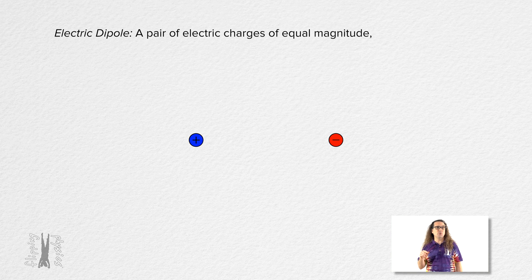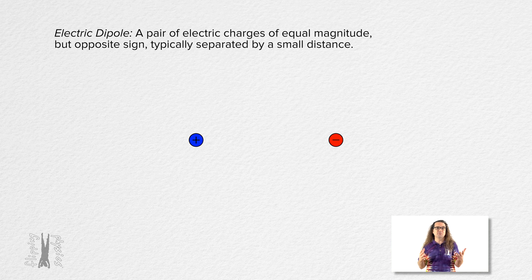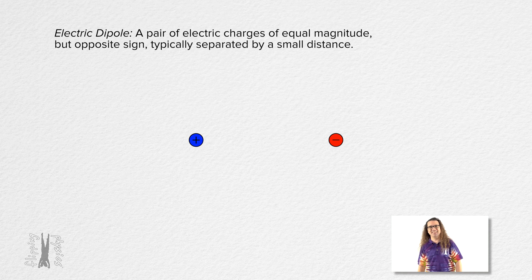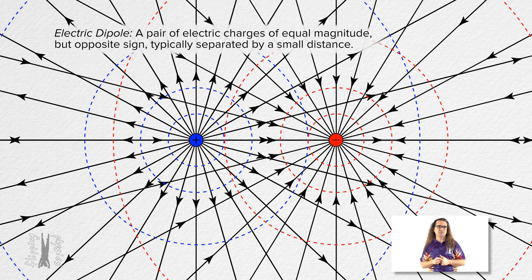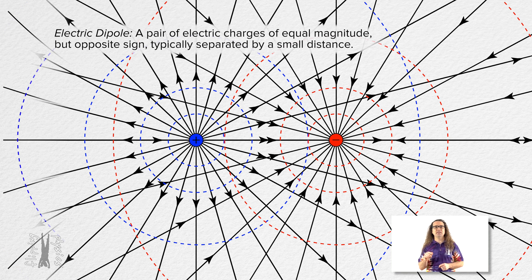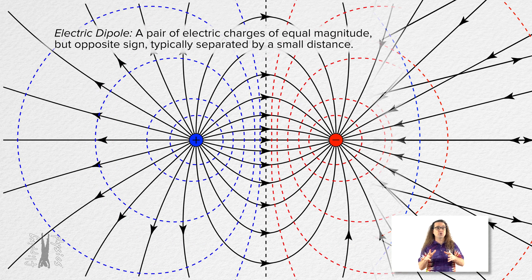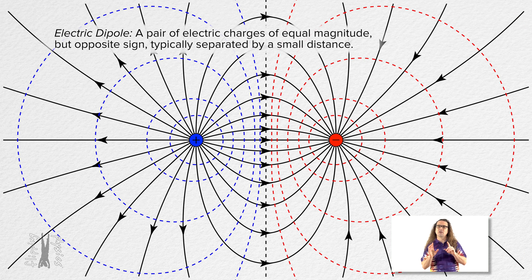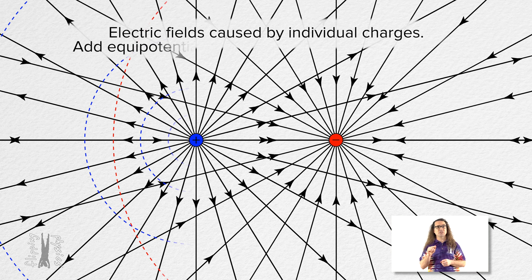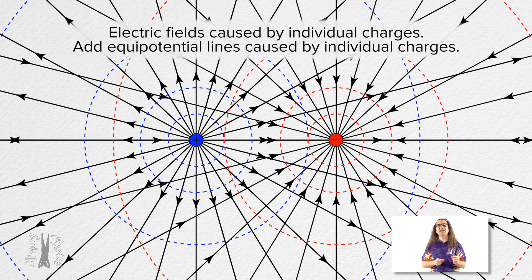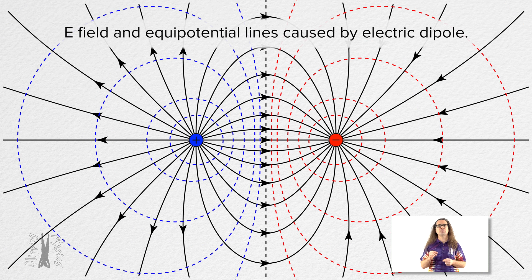Now let's switch to a simple electric dipole. An electric dipole is a pair of electric charges of equal magnitude but opposite sign separated by some typically small distance. Let's start with just the electric fields caused by each of the singular charges, and let's add the equipotential lines caused by each of the singular charges. Then let's transition to the electric field and equipotential lines caused by both charges together — the electric dipole. Start with just the electric fields caused by each of the singular charges, add the equipotential lines, and again transition to the electric field and equipotential lines caused by the electric dipole.